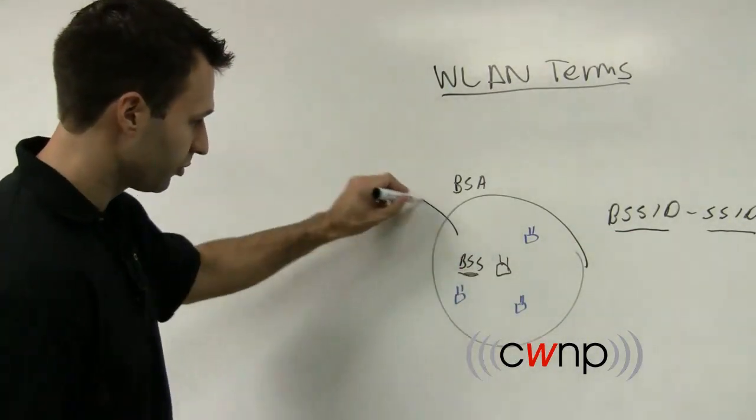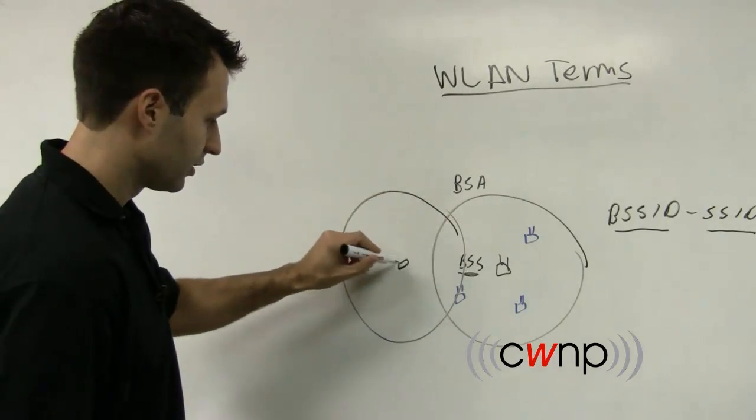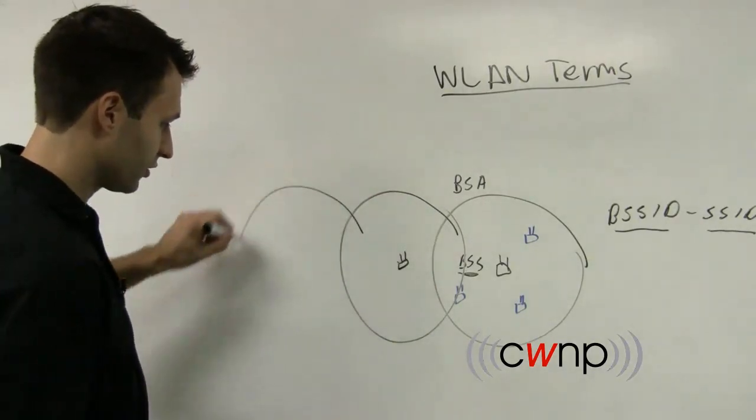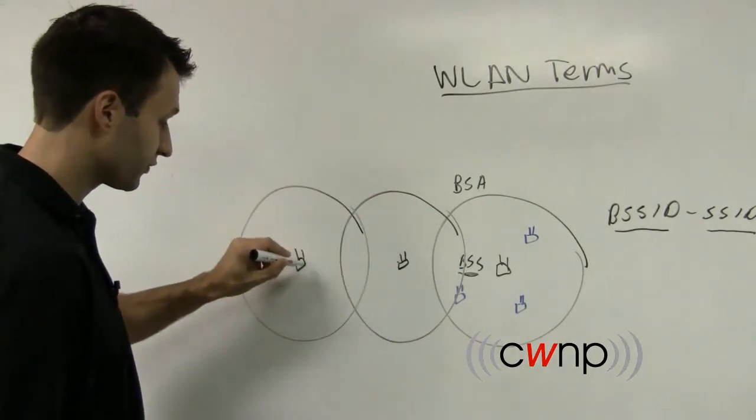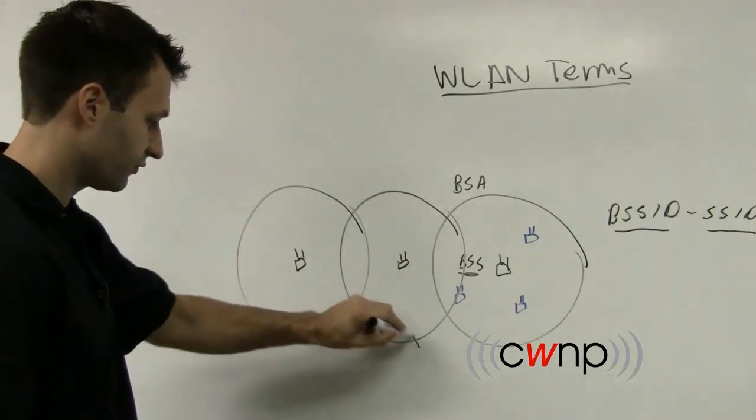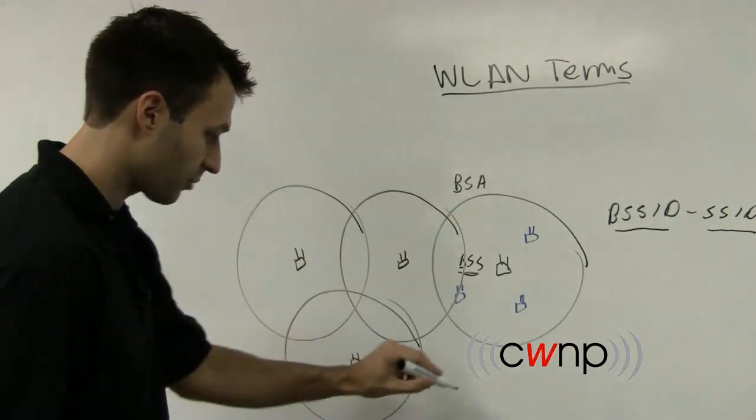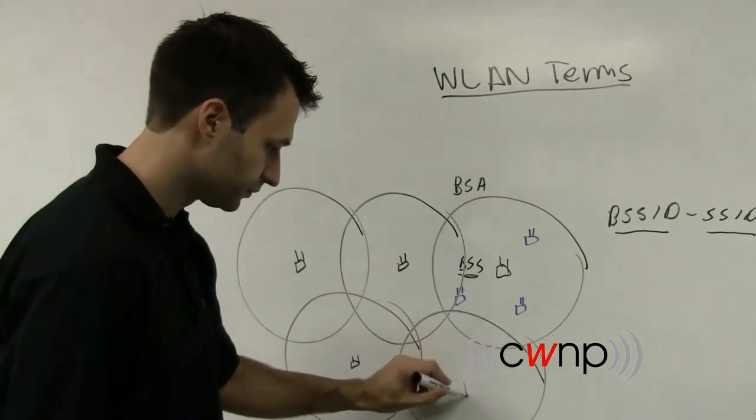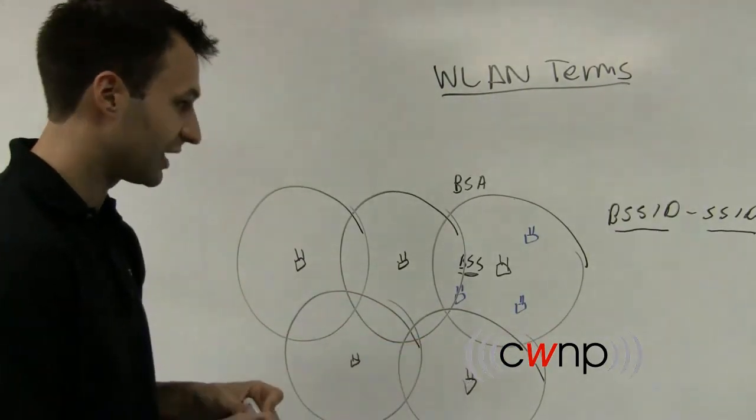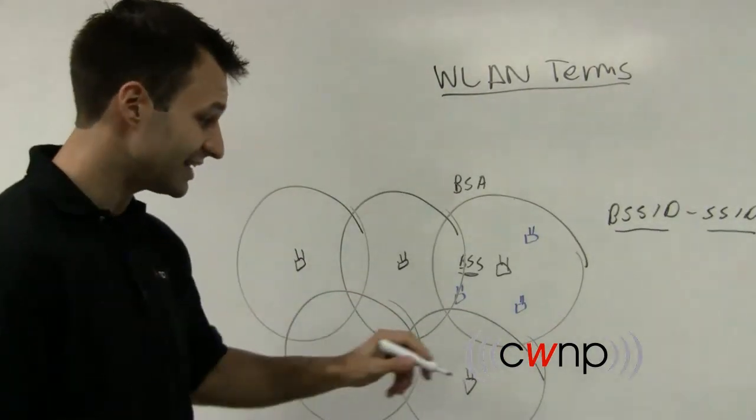Now let's say that you've got multiple access points in your building. You've got them configured to overlap. Your service areas are going to overlap so that you've got services comprehensively across your building. This is called an extended service set, so an ESS.